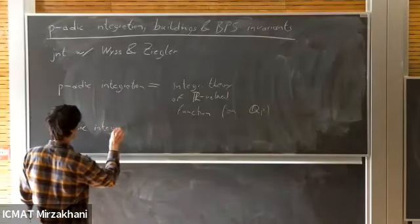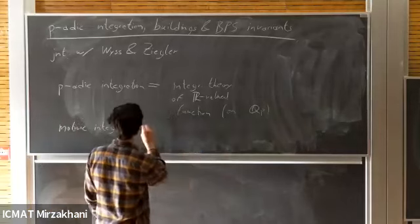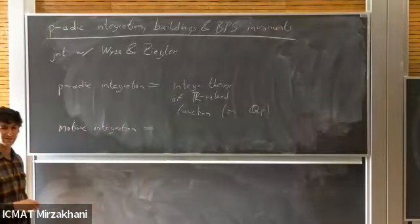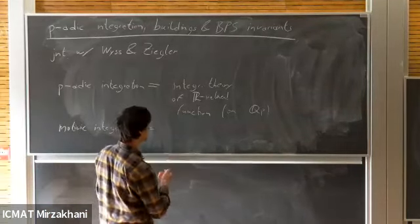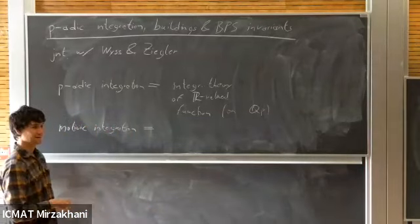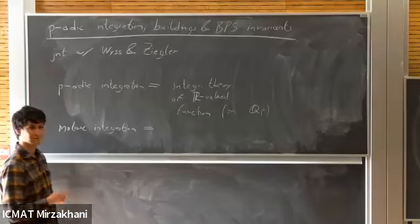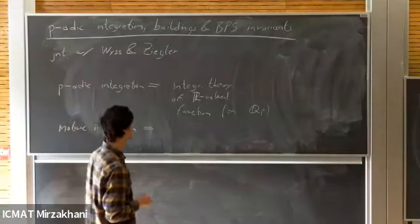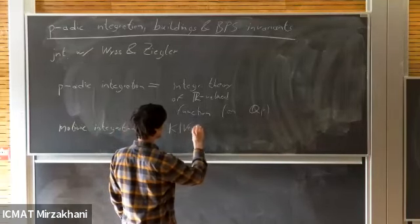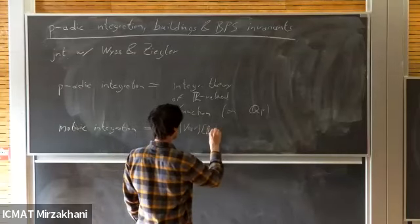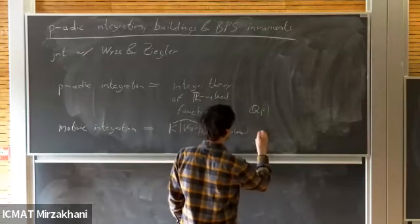But the space you're integrating on is of p-adic nature — something like Q_p, or Q_p-points of an algebraic variety. That's really the framework we're working in. It really is just classical integration theory, just like we learned in undergrad, on a measure space related to the p-adic numbers. And there's an alternative theory: motivic integration, introduced by Kontsevich.